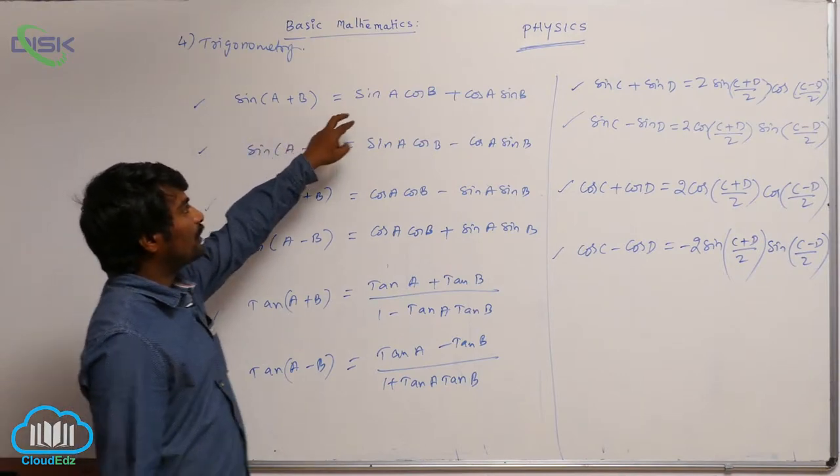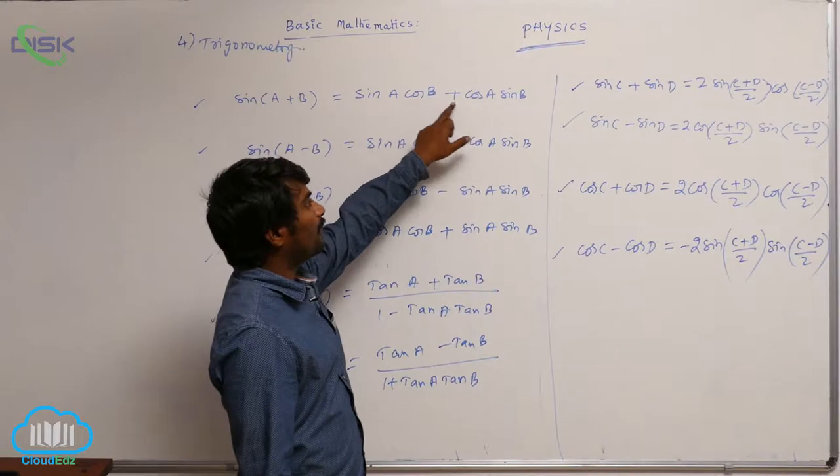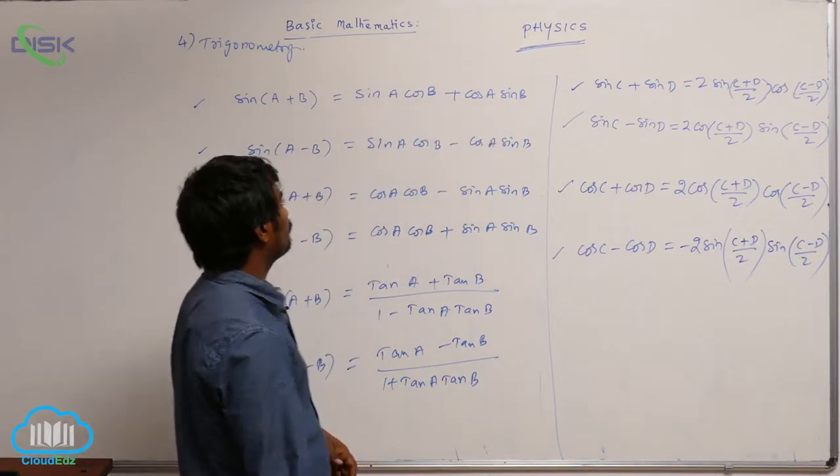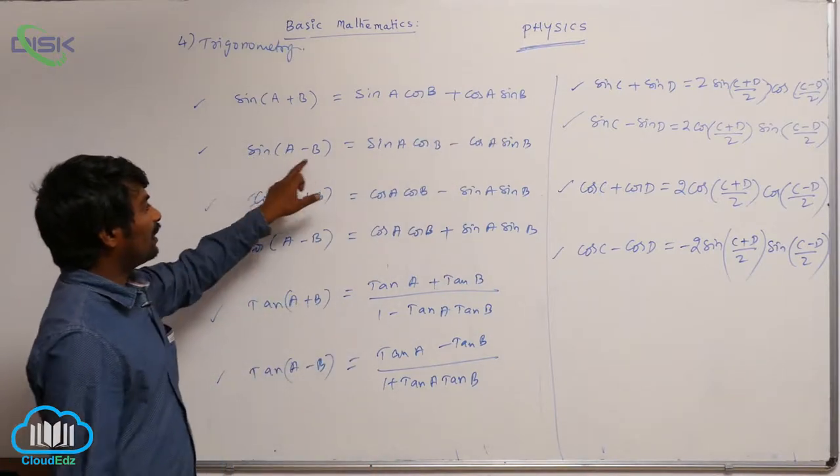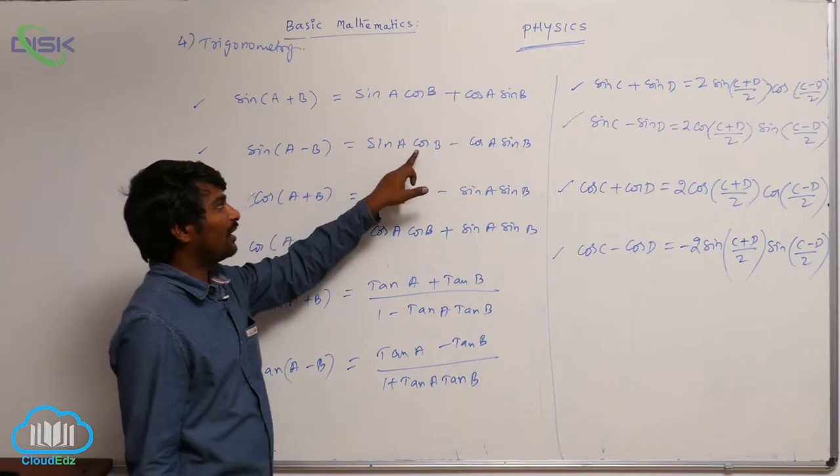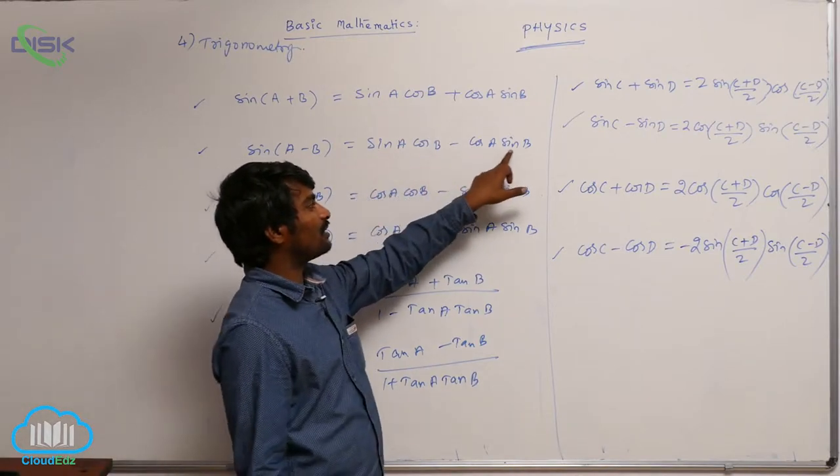sin(a + b) = sin a cos b + cos a sin b. sin(a - b) = sin a cos b - cos a sin b.